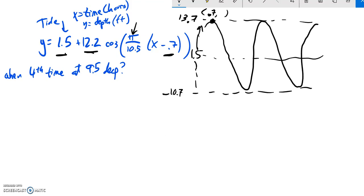The other thing I know is by looking at this part, I know the period of this. Remember, I can go 2 pi divided by that b value, pi over 10.5, and I get 21. So this repeats itself every 21 hours. That's its period.